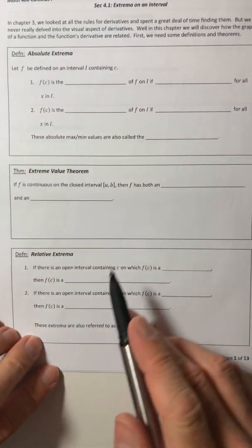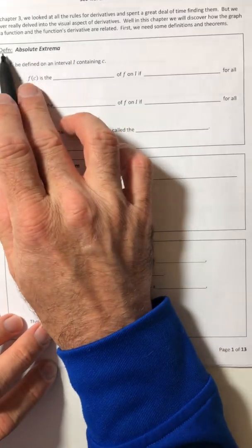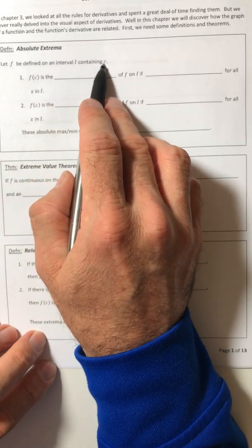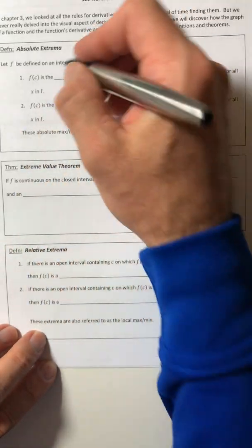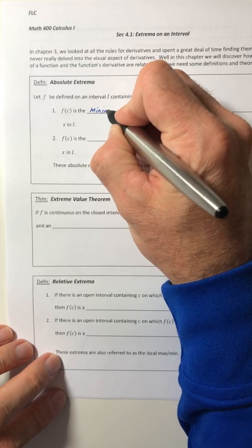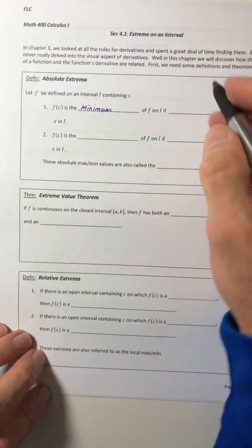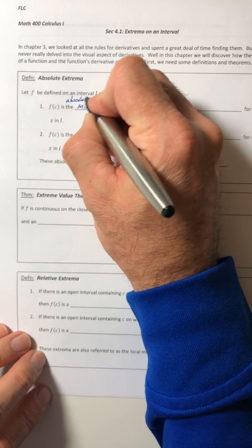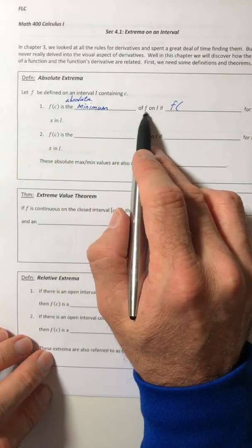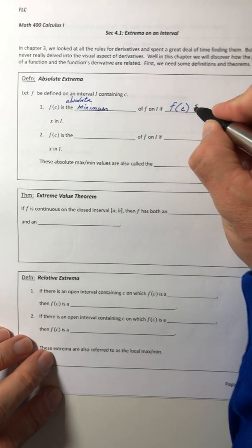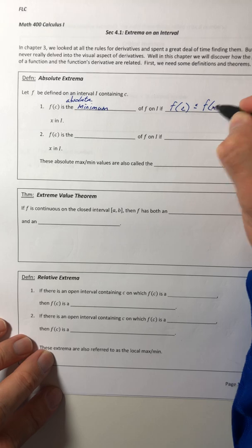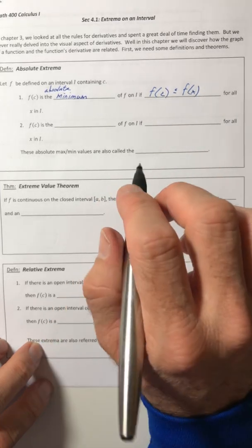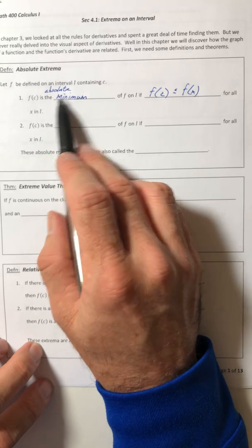Okay, so we got to spend some time going over definitions and theorems and all that fun stuff. First definition, absolute extrema. Let F be defined on an interval I containing C. So F of C is the absolute minimum of F on I if F of C is less than or equal to F of X for all X in I. So if that function value is the absolute smallest function value, that is considered the absolute minimum.